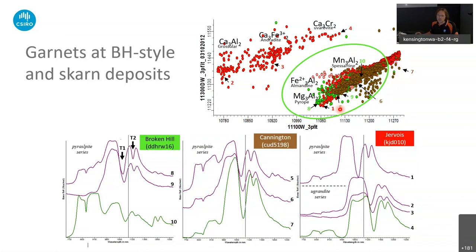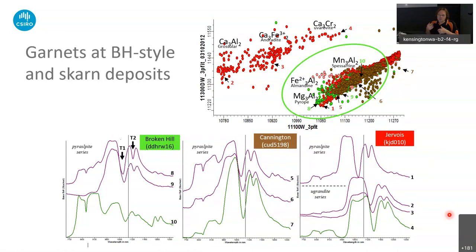It's still interesting that at Broken Hill and Kennington we mainly have pyrope-spessartine-type garnets, whereas in Jervois we've got a mix between pyrope-spessartine but also the uvarovite-andradite series. I don't want to say Jervois is a skarn deposit — probably not — but it's just one tool to use thermal infrared reflectance spectroscopy to map garnet composition changes and compare different deposit styles to get your head around how these deposits developed.